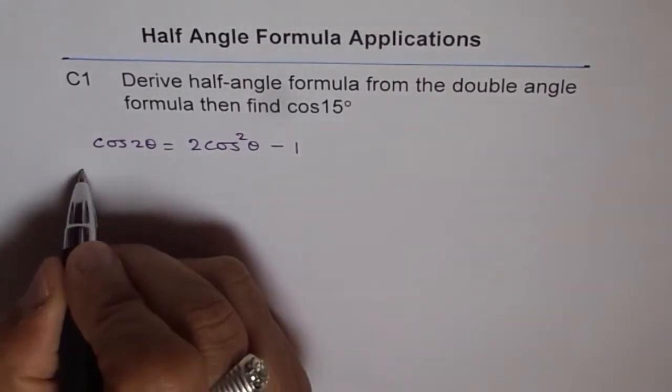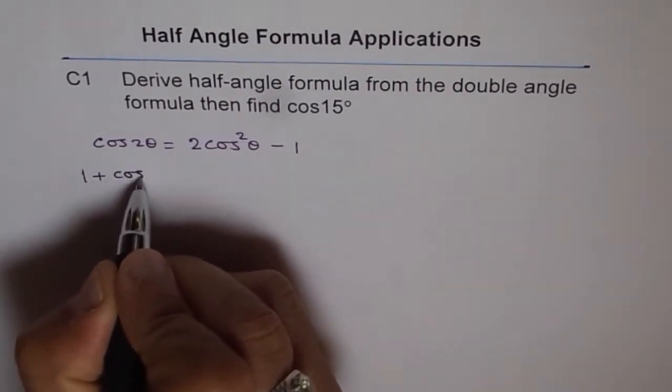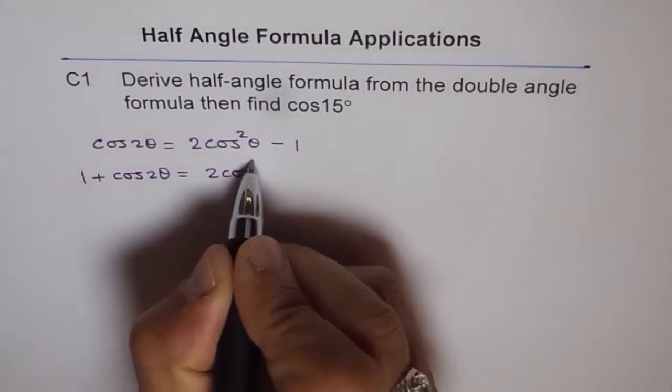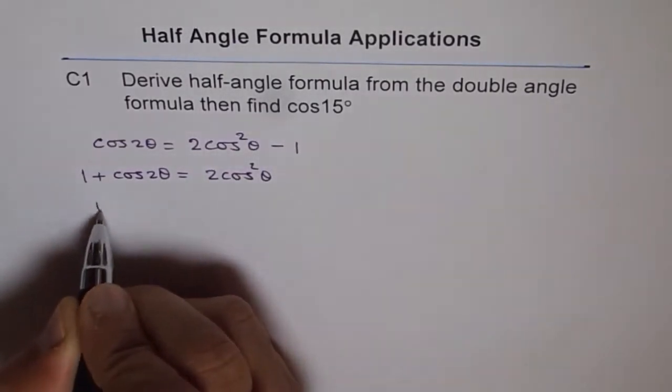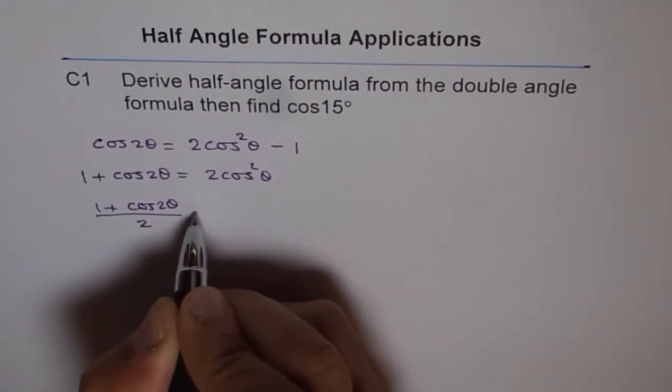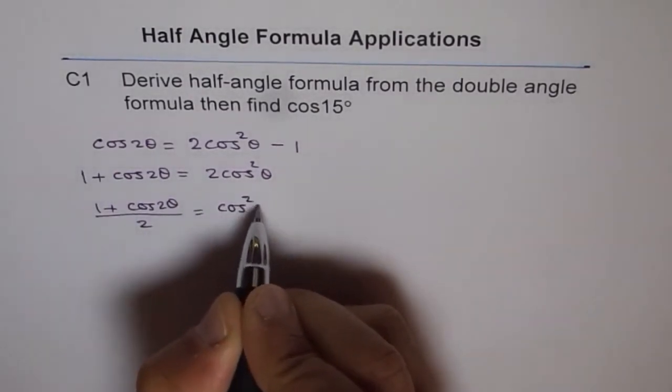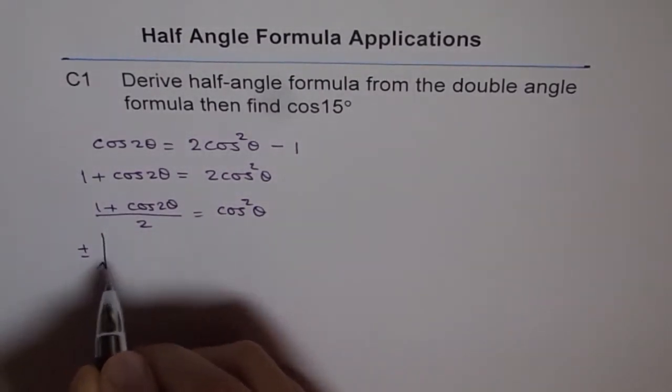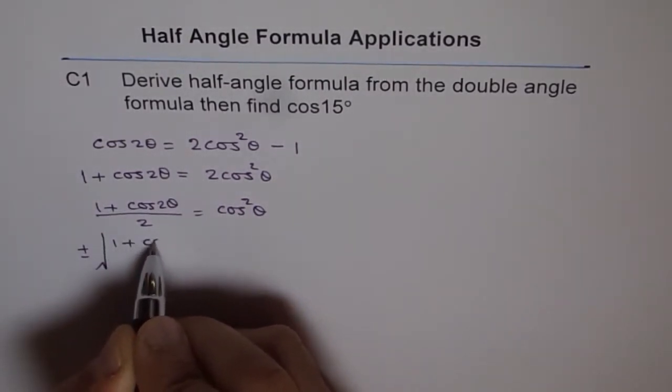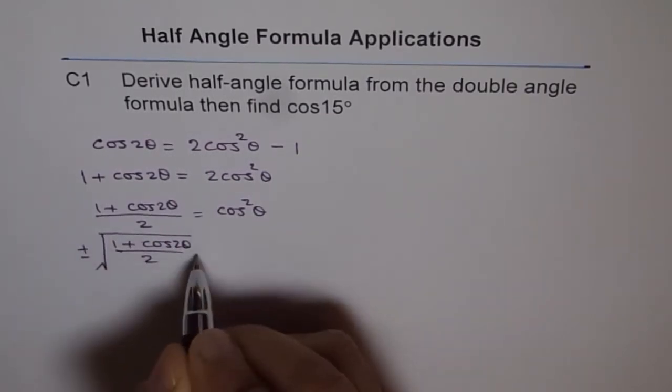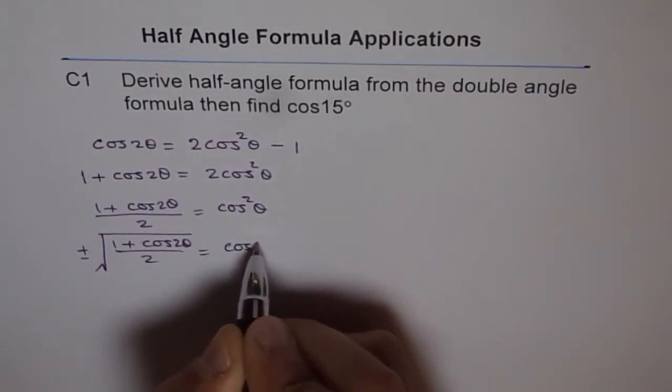We can bring 1 here and then we get 1 + cos 2θ = 2 cos²θ, and then (1 + cos 2θ)/2 = cos²θ. Now, we can square root it. When we square root, it is plus and minus. ±√[(1 + cos 2θ)/2] = cos θ.